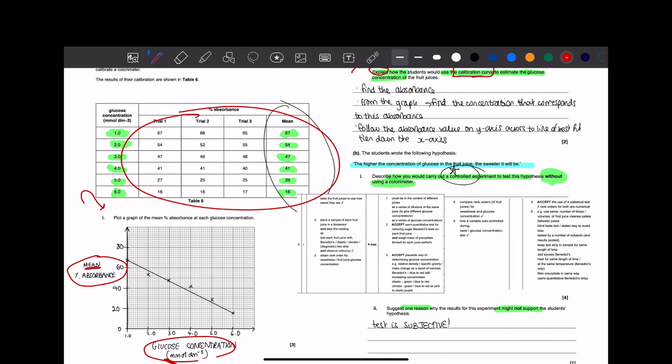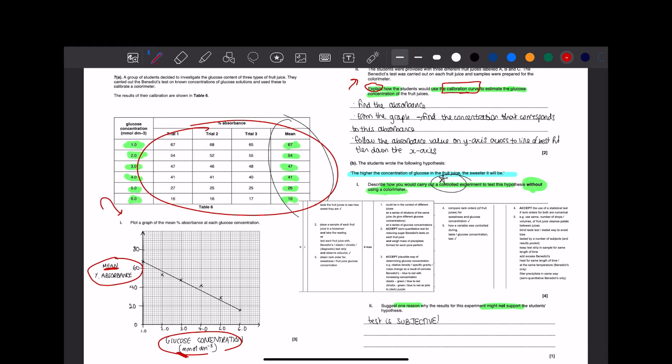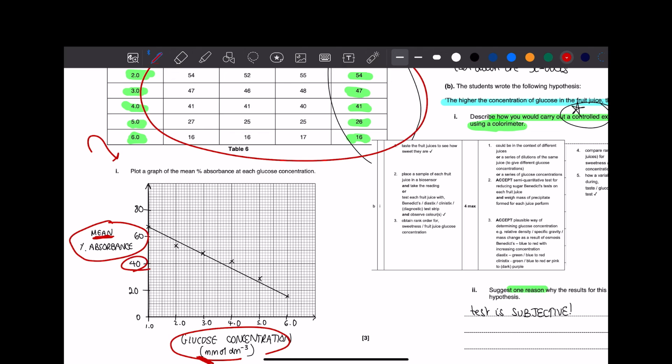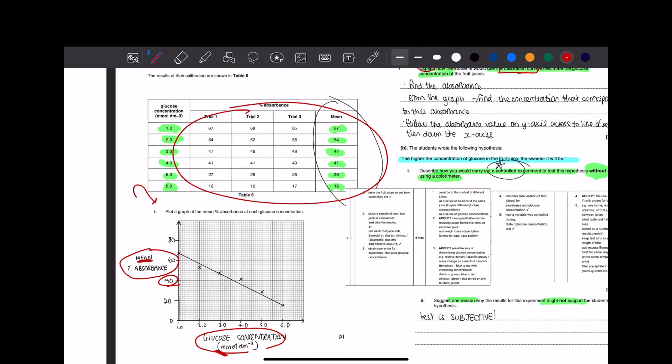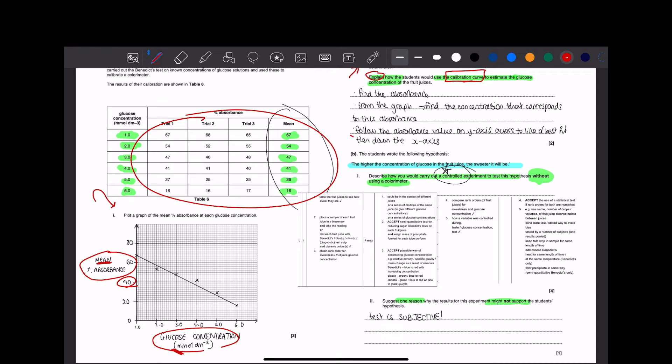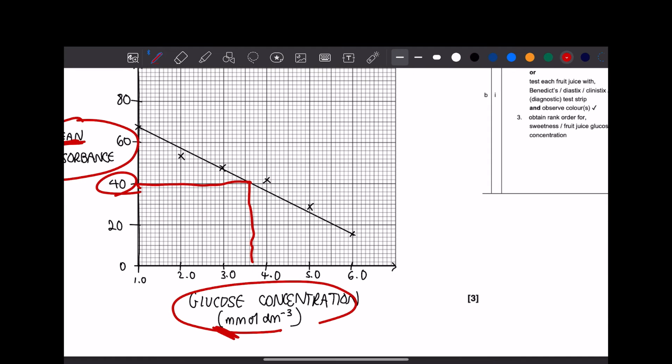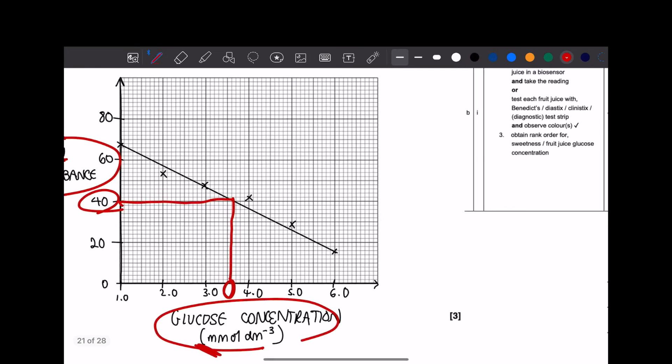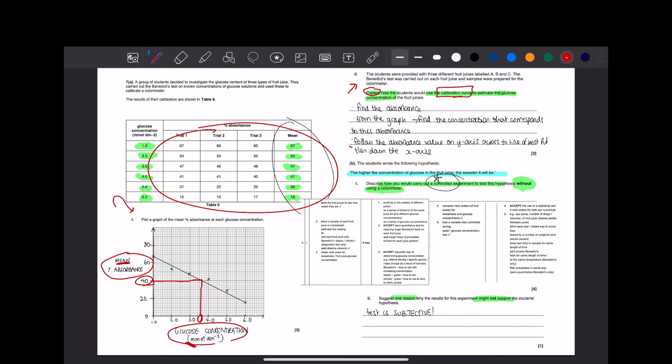Let's say you put sample A into the colorometer and you've got an absorbance of about 40%. What you do, as I've written here, is that you follow the absorbance value across to where it hits the line of best fit, and then you go down. This value over here, whatever that is, like 3.5 millimoles per meter cubed, is the answer. That would be the concentration of glucose. This is something you really need to memorize and actually understand.